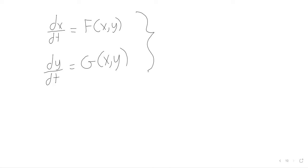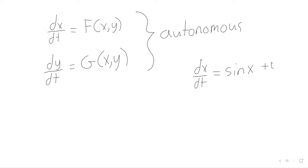We defined autonomous, but that was long ago. What we mean by autonomous is that the variable t isn't explicitly appearing in any of the right-hand functions. Something like dx/dt equals the sine of x plus y, dy/dt equals x minus y — this is autonomous. If we made dy/dt be x minus y plus t, it's no longer autonomous because the variable t is appearing in the expressions.